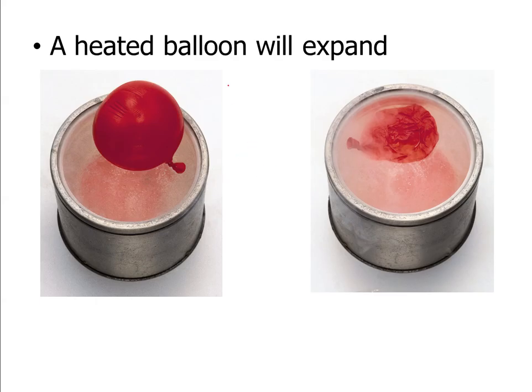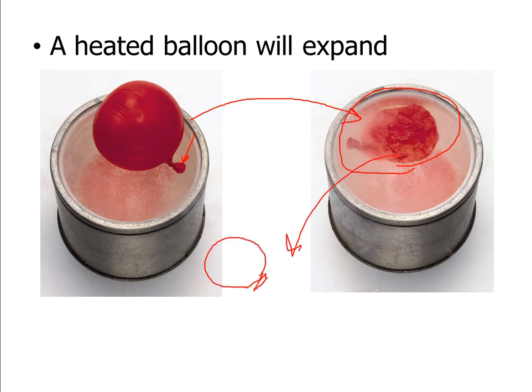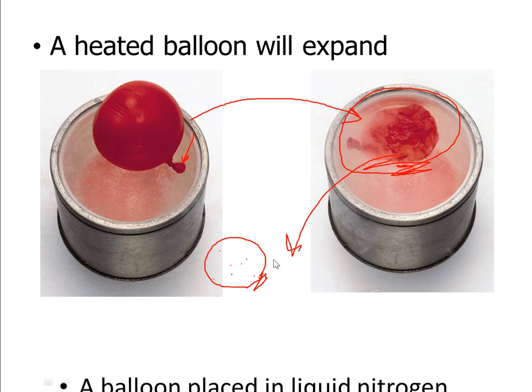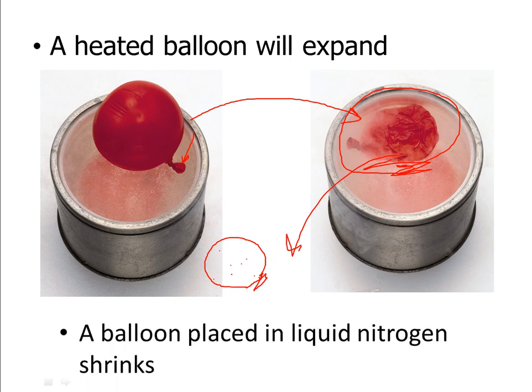If you heat up a balloon, it will expand. If you take a balloon and put it in something like liquid nitrogen, it will cool down and contract. This balloon here is not empty. It has the exact same amount of gas in it. The particles themselves have cooled down and the volume between the particles has become less. A balloon placed in cool environments will have smaller volume and warmer environments will have larger volume.